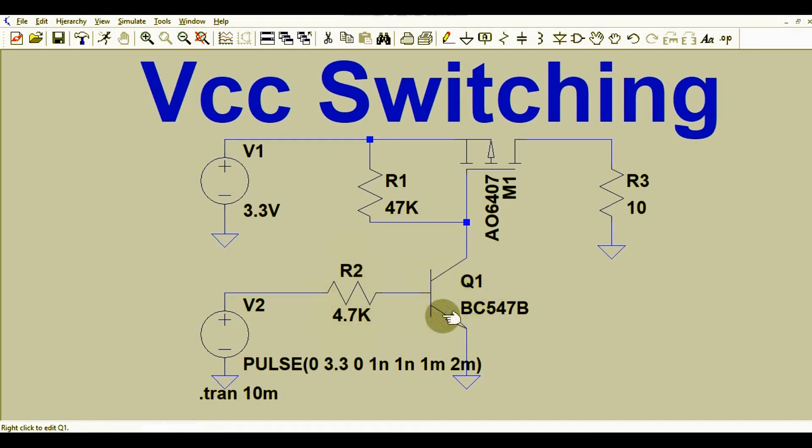have an NPN transistor BC547B, and then this is a P-channel MOSFET. This is connected to a 3.3 volt power supply, and this is your load or output. Now I will run the simulation